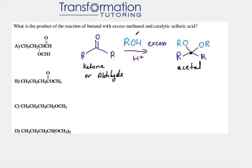Now let's do a problem to get a better sense of how to predict the acetal product. The question asks: what is the product of the reaction of butanal with methanol and catalytic sulfuric acid?